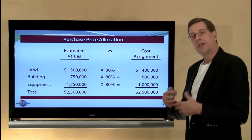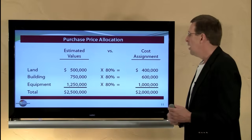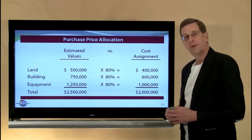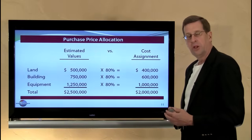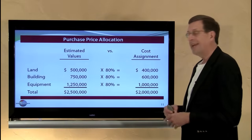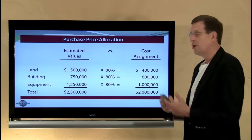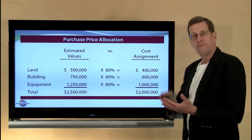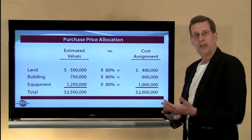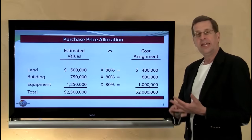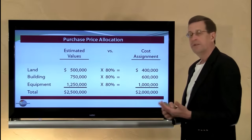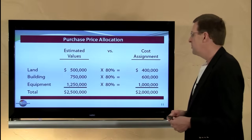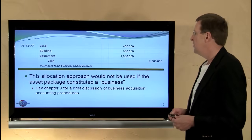Additionally, on an international basis, whereas under U.S. GAAP we would assign $750,000 to the building, globally it's very common to encounter a component-type allocation. You might look at a building and say it has a roof with a separate life, a heating and air conditioning system with a separate life, and so on. There is actually more allocation of costs under international accounting standards than under U.S. GAAP.